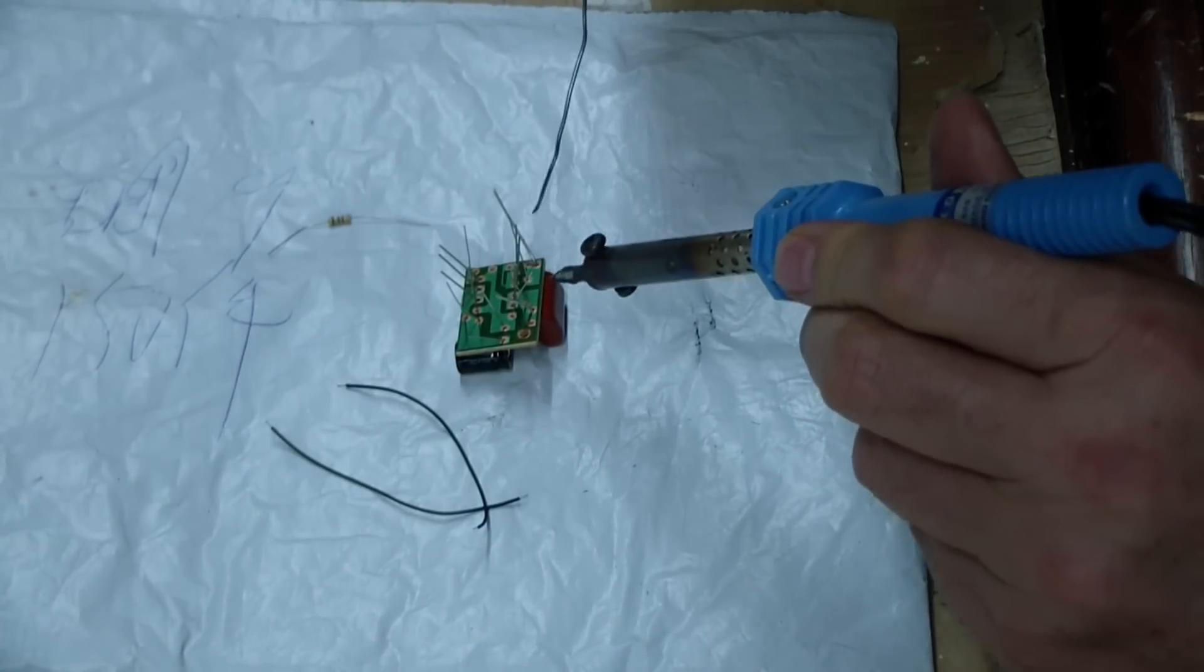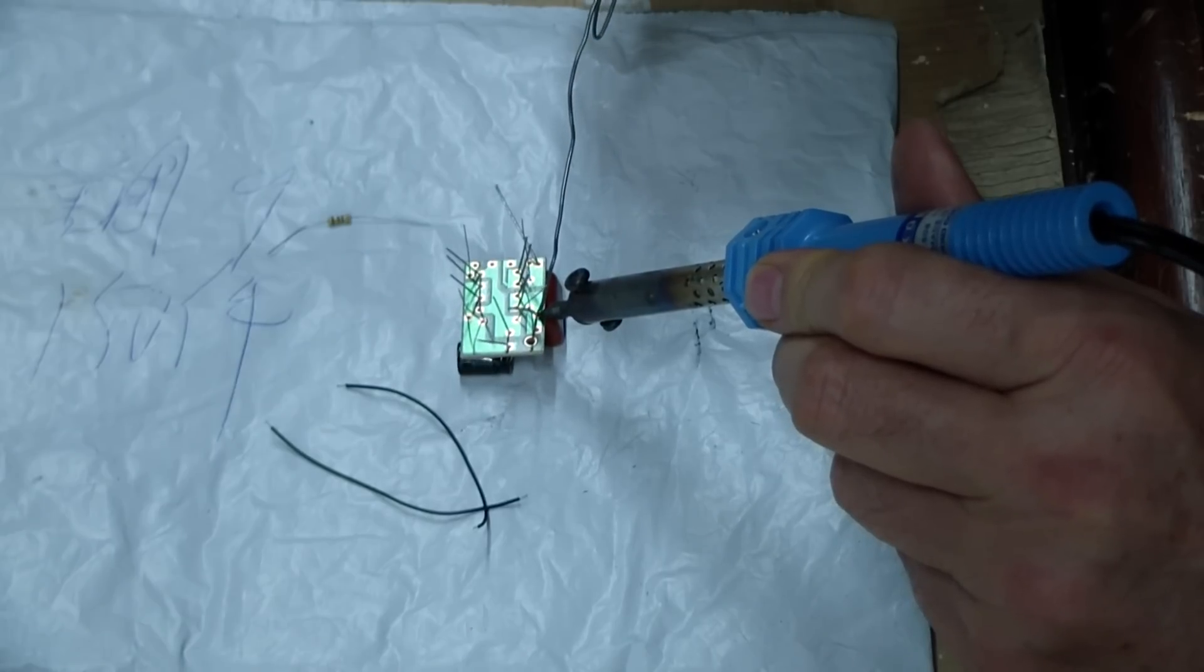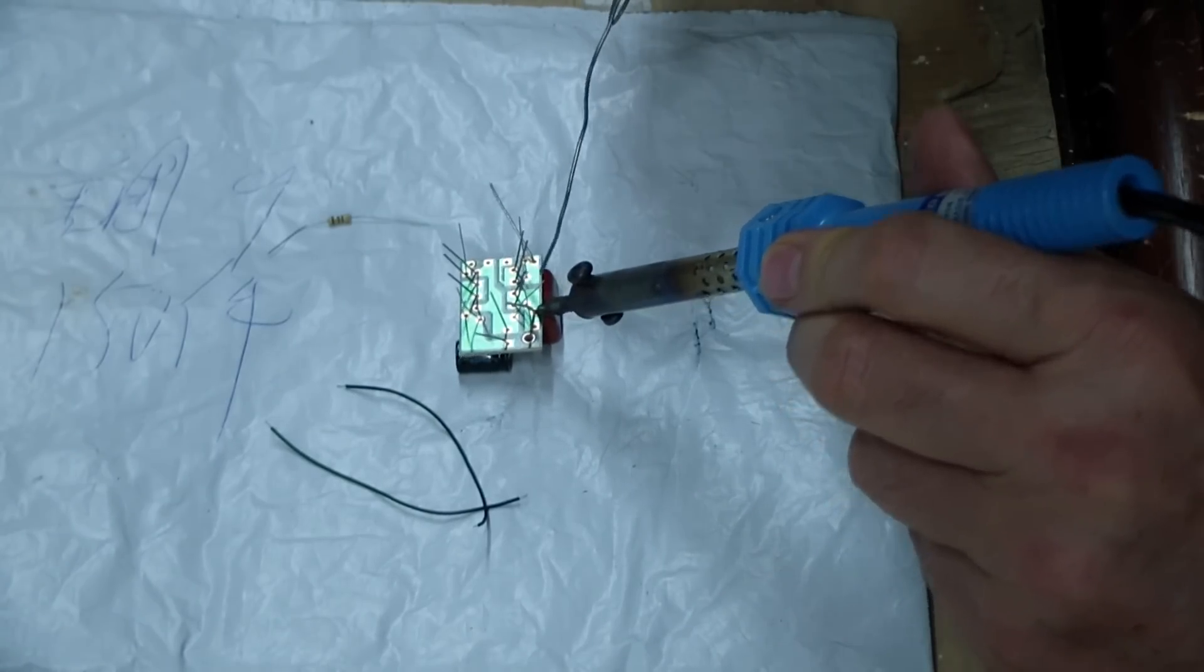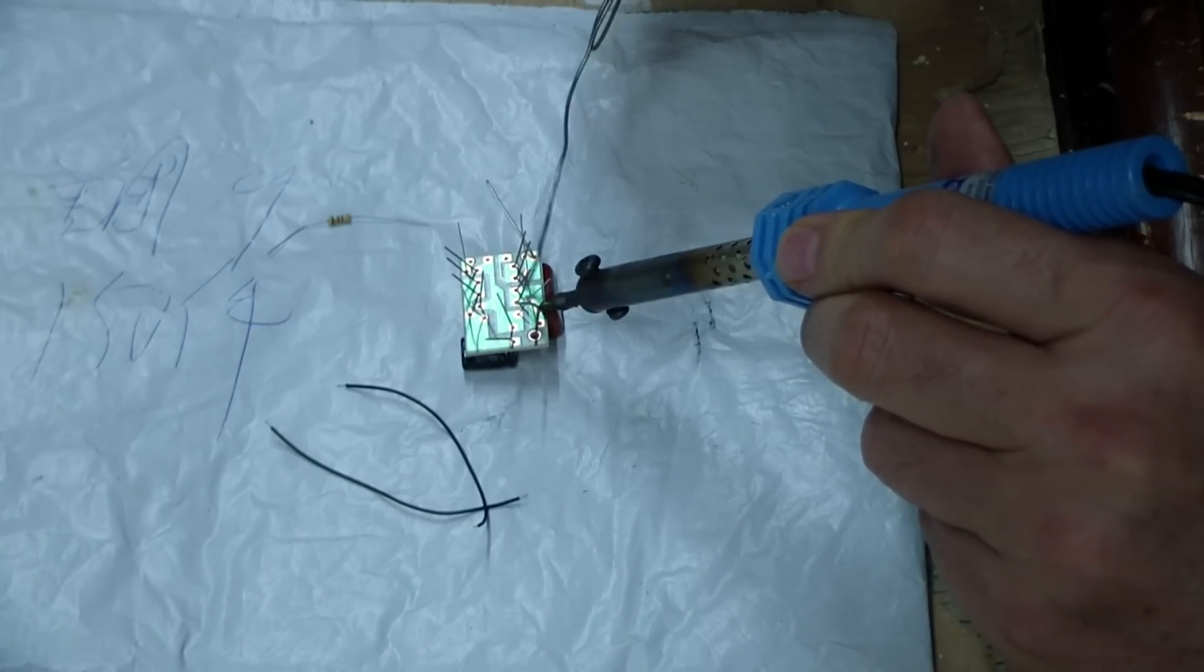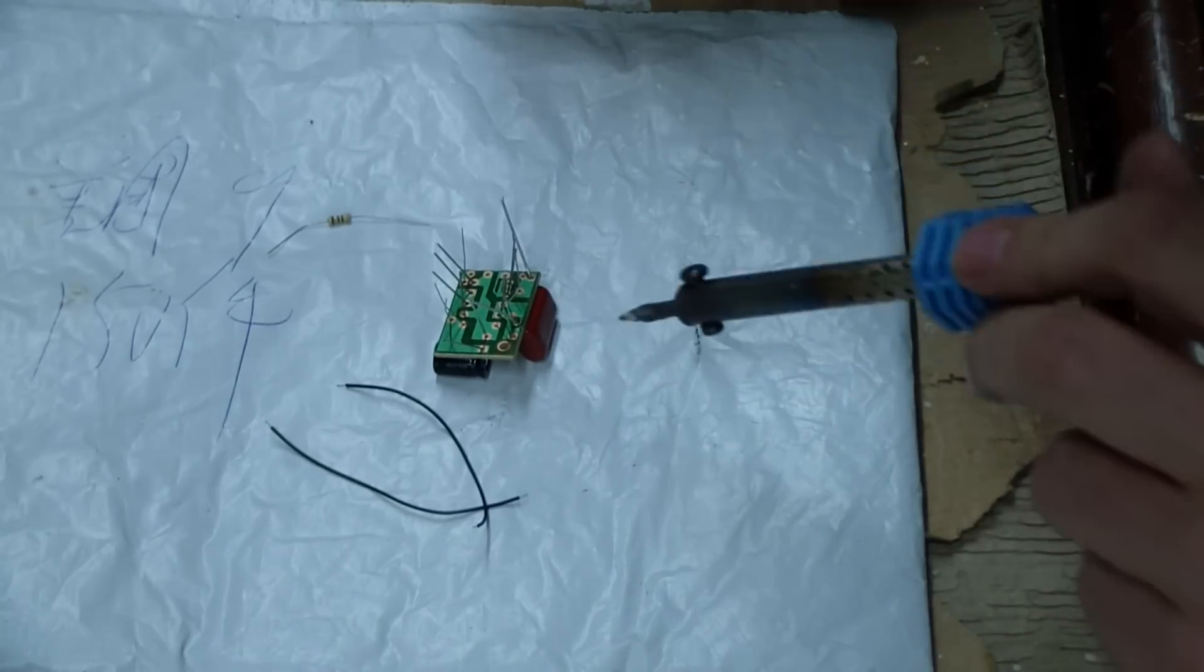Take the pencil soldering iron, you put it in there, you heat up the work and the lead, and then once it's hot, it'll flow. There you go.